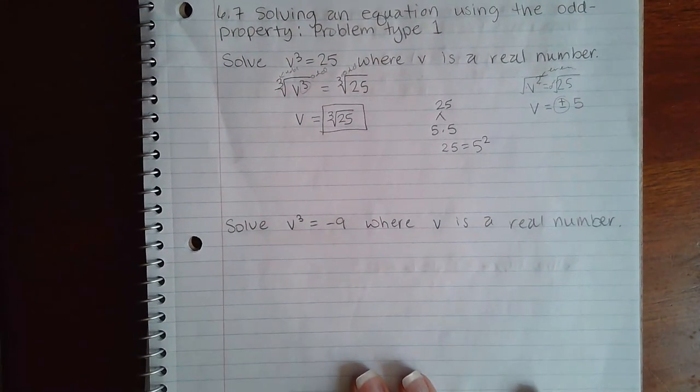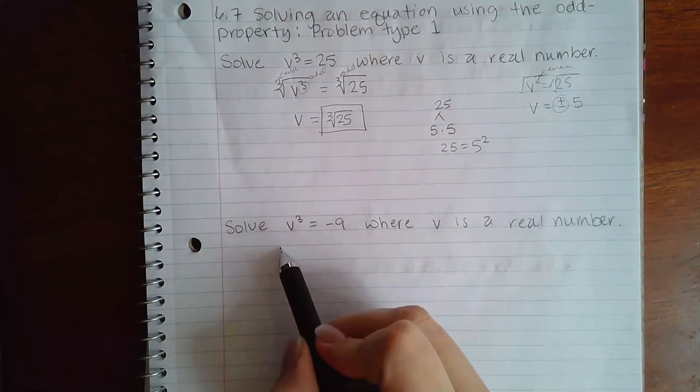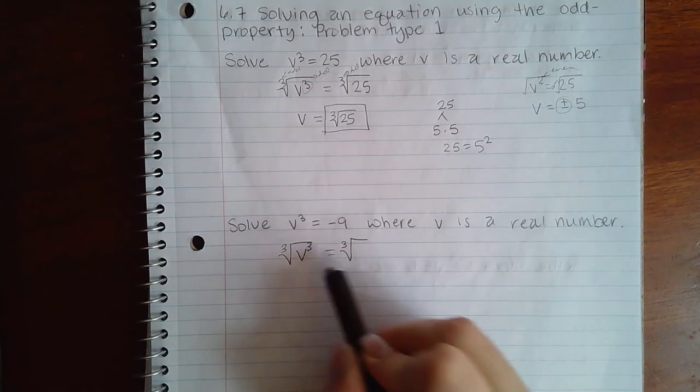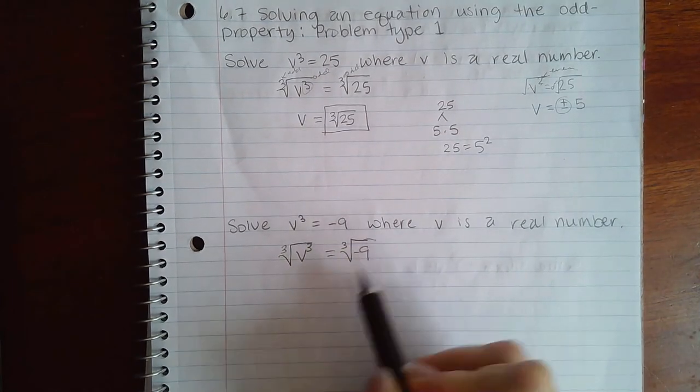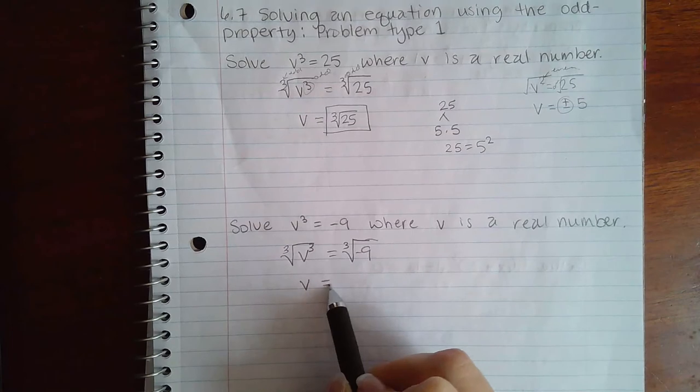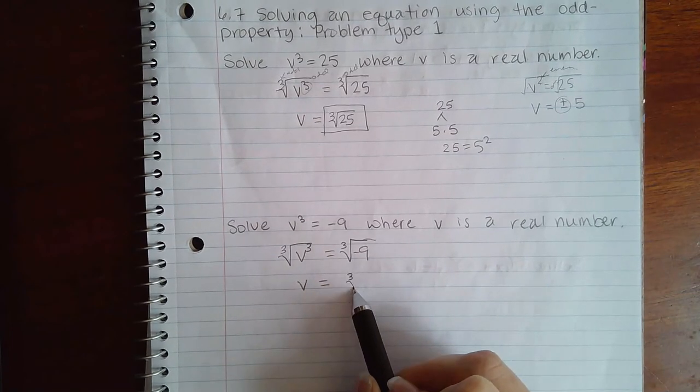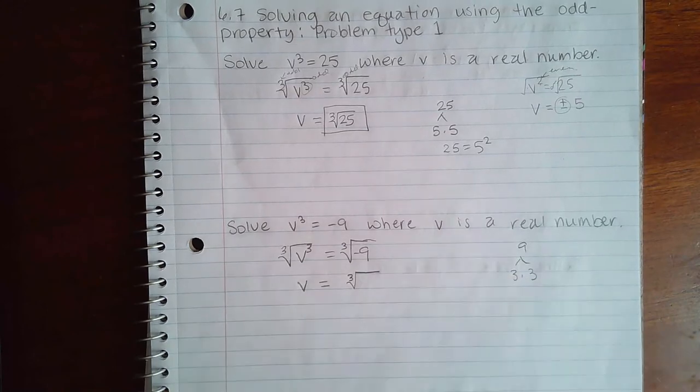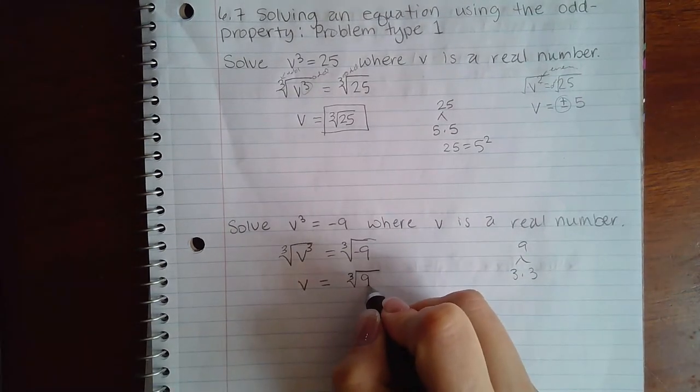Now similarly over here we're going to take the cube root on both sides, and then the cube root on this side. And here we get v by itself and here I get the cube root of 9 which will not simplify because 9 is just 3 times 3. So it stays a 9 inside.